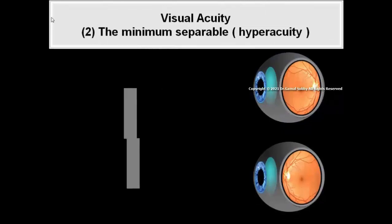2. The minimum separable concerns the judgment of the location of a visual target relative to another element of the same target.